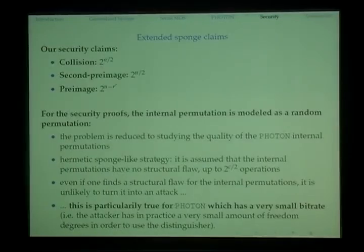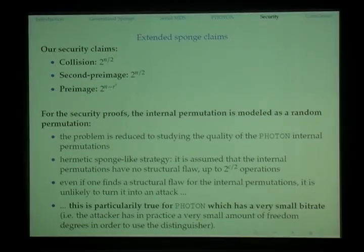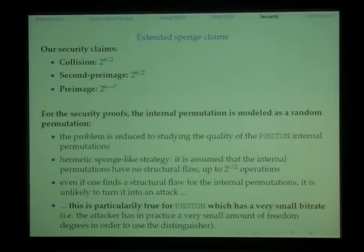Looking at the security of Fontan: the claimed security is 2^(n/2) for both collision and second preimage, and 2^(n - r') for preimage. The security proof relies on the internal permutation — if we model the internal permutation as a random oracle, then the entire hash function is ideal. It is assumed there is no structural flaw up to 2^(c/2) operations, but even if a structural flaw is found in the internal permutation, it is unlikely to turn into an attack because we have set a very small bit rate where the attacker has very limited degrees of freedom.